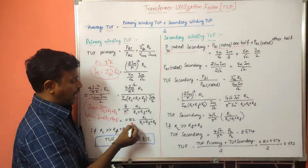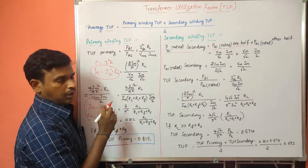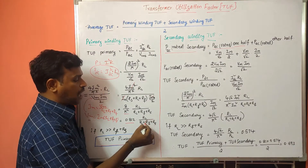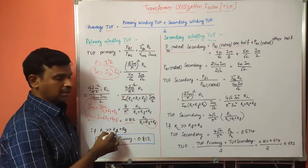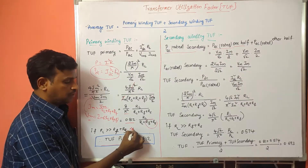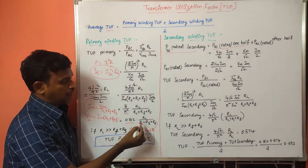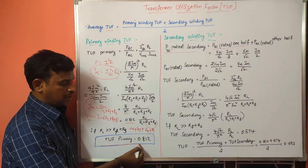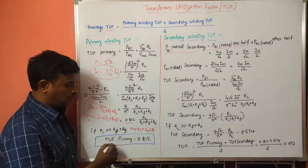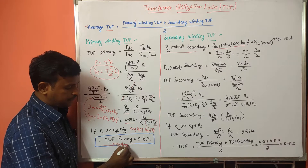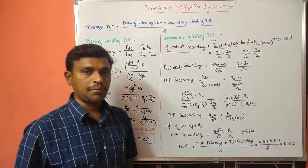The value of 8 / π² is 0.812, and we have R_L / (R_L + R_F + R_S). Since R_F + R_S is very much less than R_L, we can neglect R_F + R_S. Therefore R_L cancels, and the total value is 0.812. This is the transformer utilization factor of the primary winding — TUF primary winding equals 0.812.